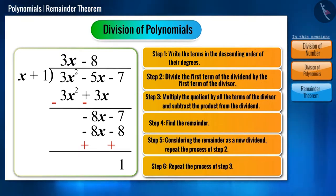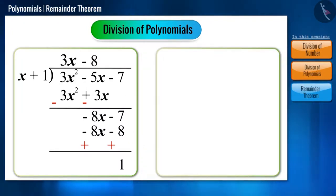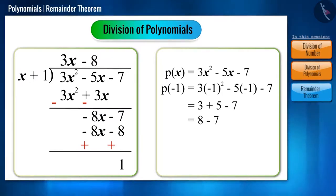Now, let's find p of minus 1 for the polynomial p of x equals 3x squared minus 5x minus 7. We got 1 as the remainder, which is the same as what we got by the division method.